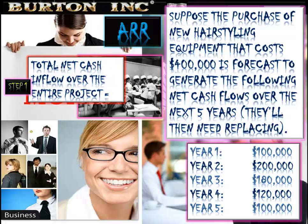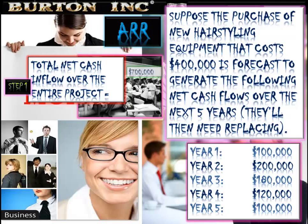There are a few steps here that you'll need to memorize and practice. Step one: total the net cash inflow over the entire project. We add up the cash flows from year one through to year five, and they come to $700,000.